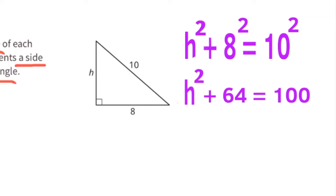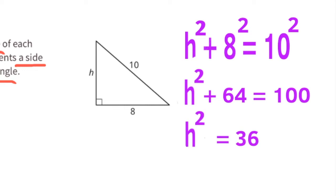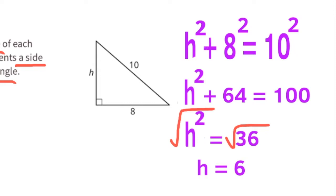Since 8² is 64 and 10² is 100, the equation reads h² + 64 = 100. To find h², subtract 64 from 100: 100 − 64 = 36, so h² = 36. The square root of 36 is 6, so the length of h is 6 units.